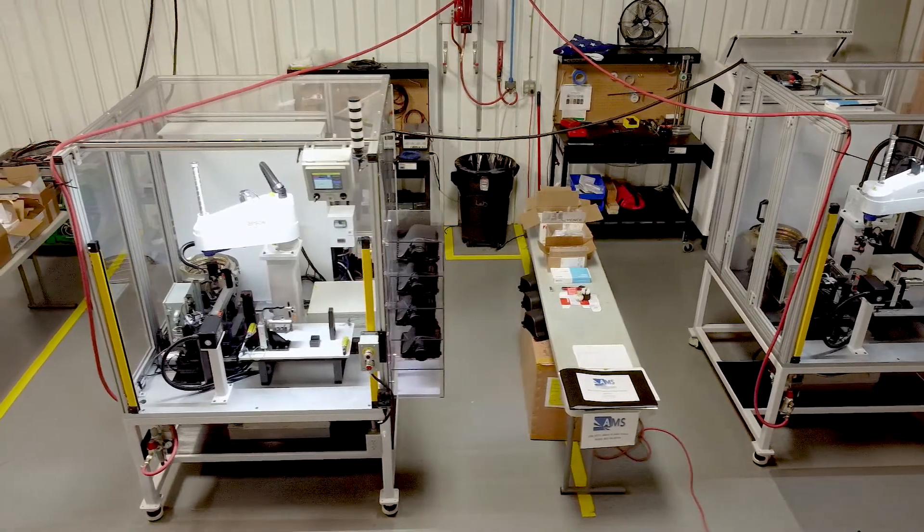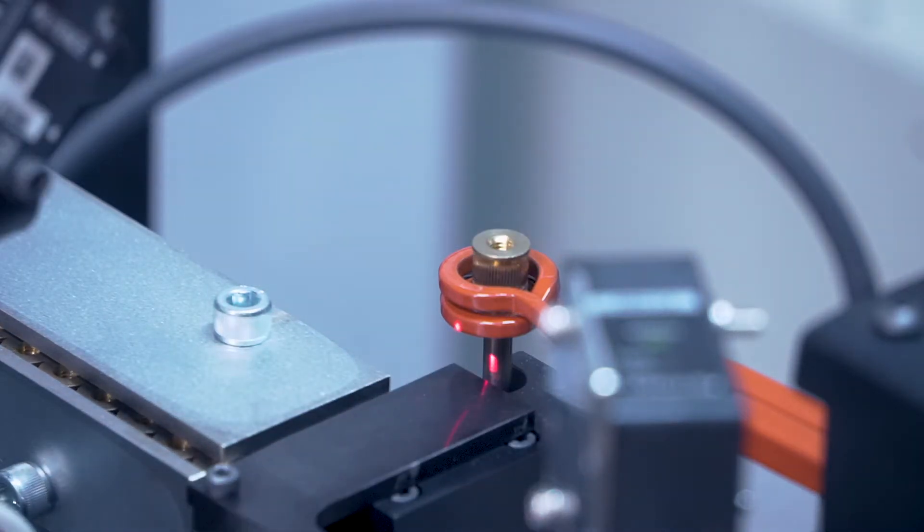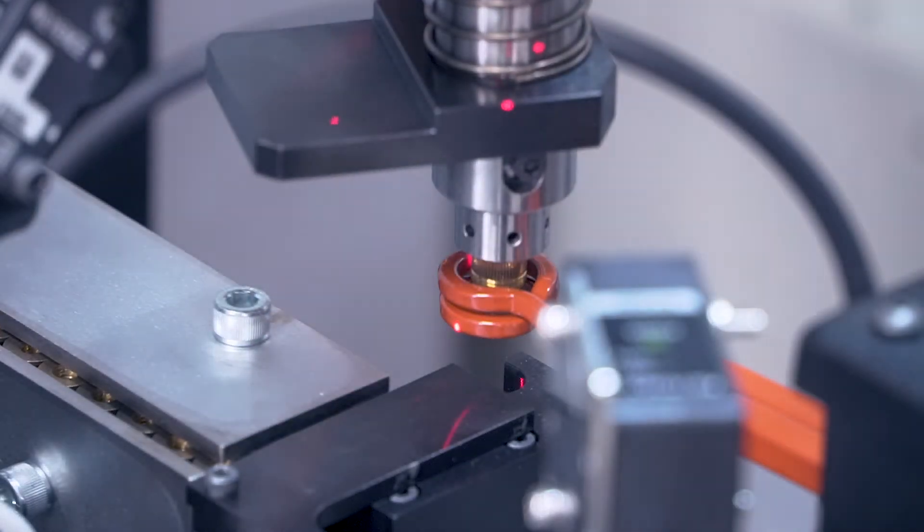Now for induction insertion. A nut is placed into the induction coil that uses its electromagnetic field to heat the nut. Then the nut is removed from the coil and pressed into the plastic part and cooled.